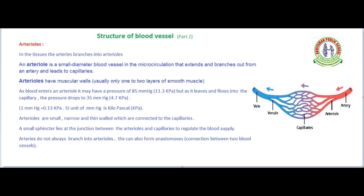Hello, good morning. Today we can discuss structure of blood vessel part 2: arterioles. In the tissue, the arteries branch into arterioles. Arterioles are small diameter blood vessels in the microcirculation that extend and branch out from an artery and lead to capillaries.